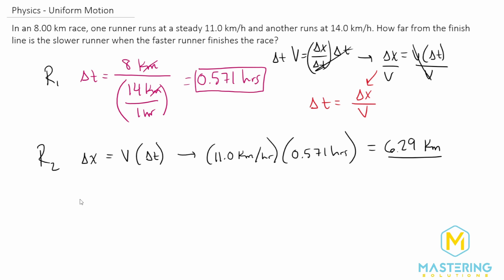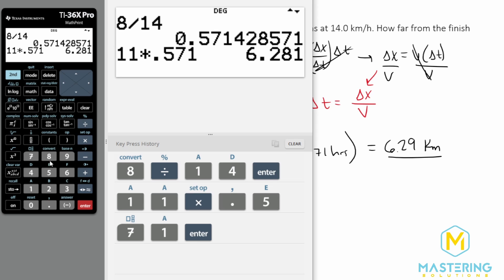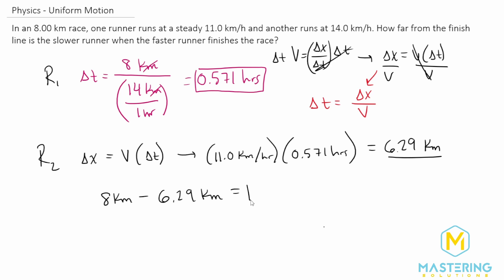Now we want to know how far away they were from the finish line. So we need to take 8 kilometers for the finish line and then subtract from that the 6.29 kilometers. So 8 minus 6.29 gives us 1.71 kilometers. So this is the distance that the slower runner was from the finish line when the faster runner was already done.